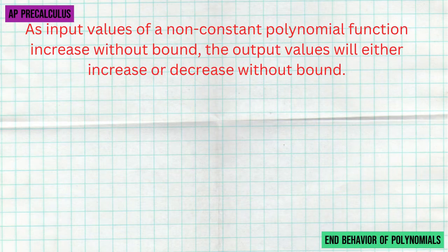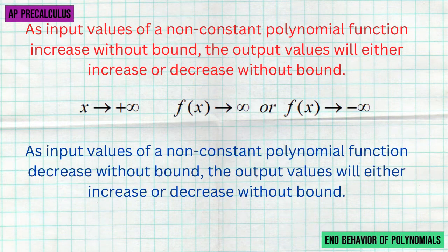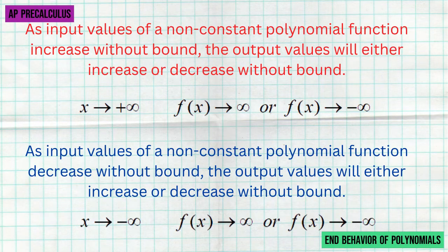How we represented that back in Algebra 2 was: as x goes towards positive infinity without bound, what is happening to our function values f of x? The answer is they're either going to go towards infinity or towards negative infinity — those are the only two options. Likewise, as input values decrease without bound, the output values will also either increase or decrease without bound. As x goes towards negative infinity, f of x is either going to go towards infinity or negative infinity.